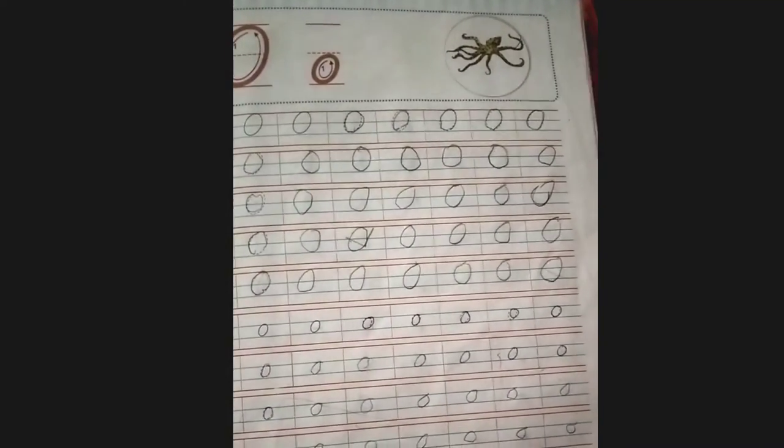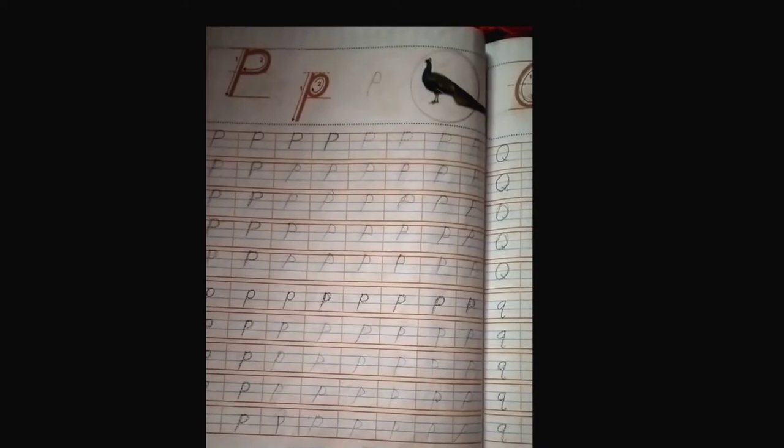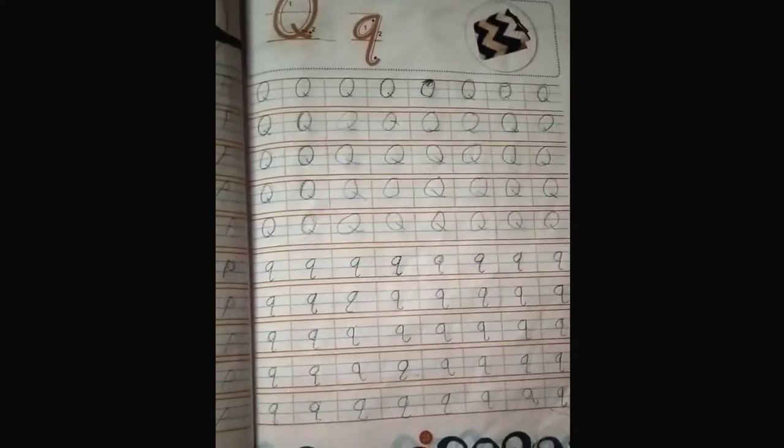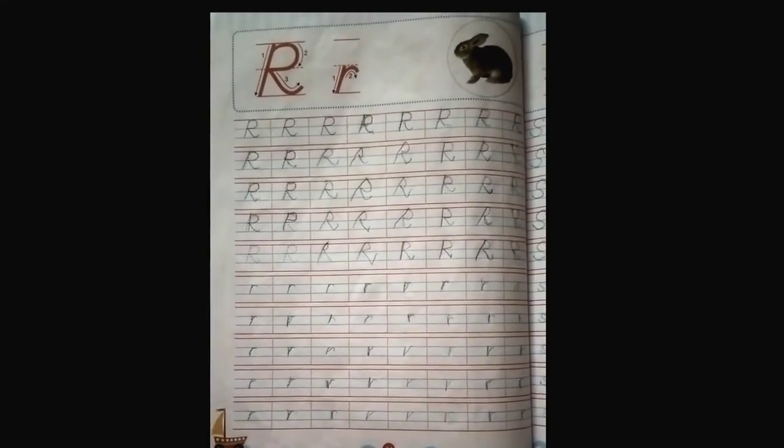O for octopus. Capital P and small p. Capital Q and small q, Q for quilt. Capital R and small r, R for rat.